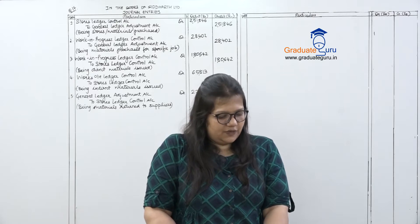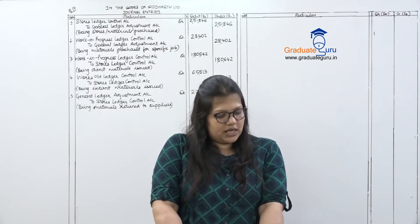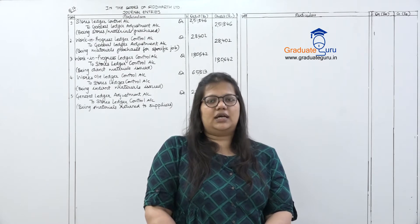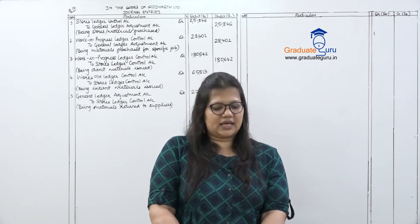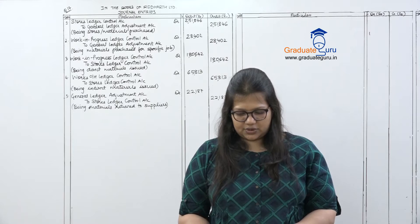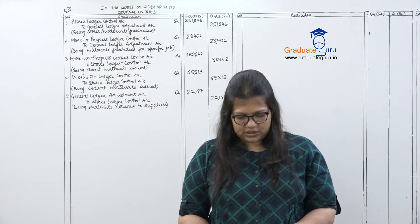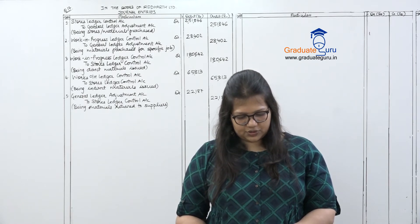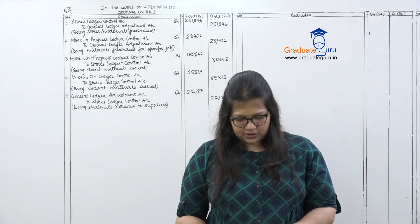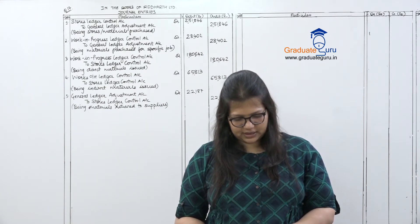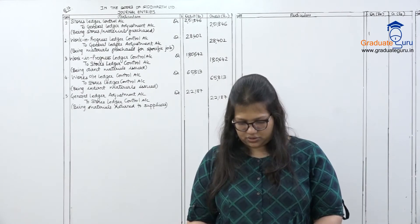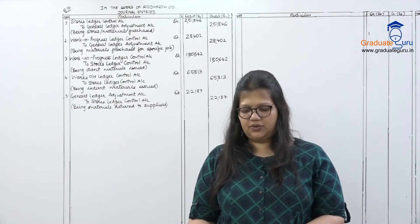Next, wages and salaries are to be allocated. The amounts are: direct workers 142,682; indirect workers 41,841; salaries to sales office staff 31,832; warehouse salaries 26,419; and head office salaries 8,100. Total comes to 2,50,874. First, we pass the wages paid entry: Wages and Salaries Control Account debit, to General Ledger Adjustment Account, 2,50,874. Narration: being wages and salaries paid.